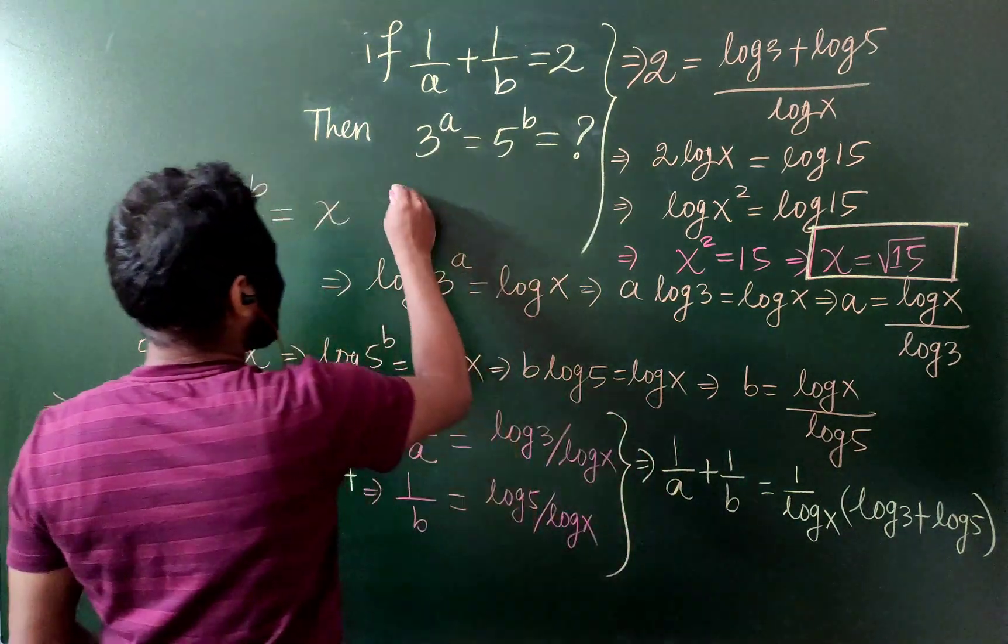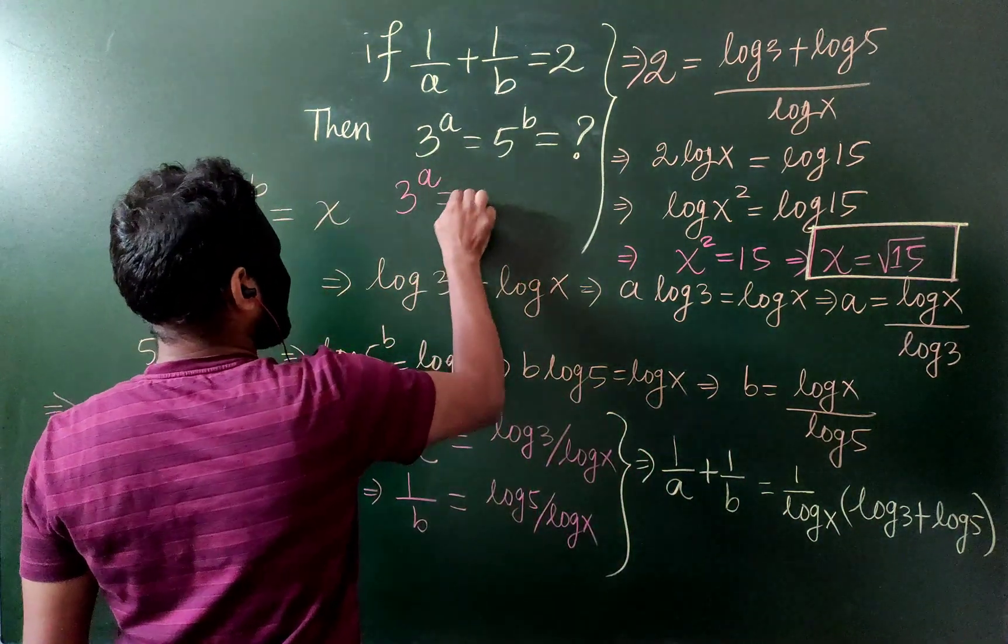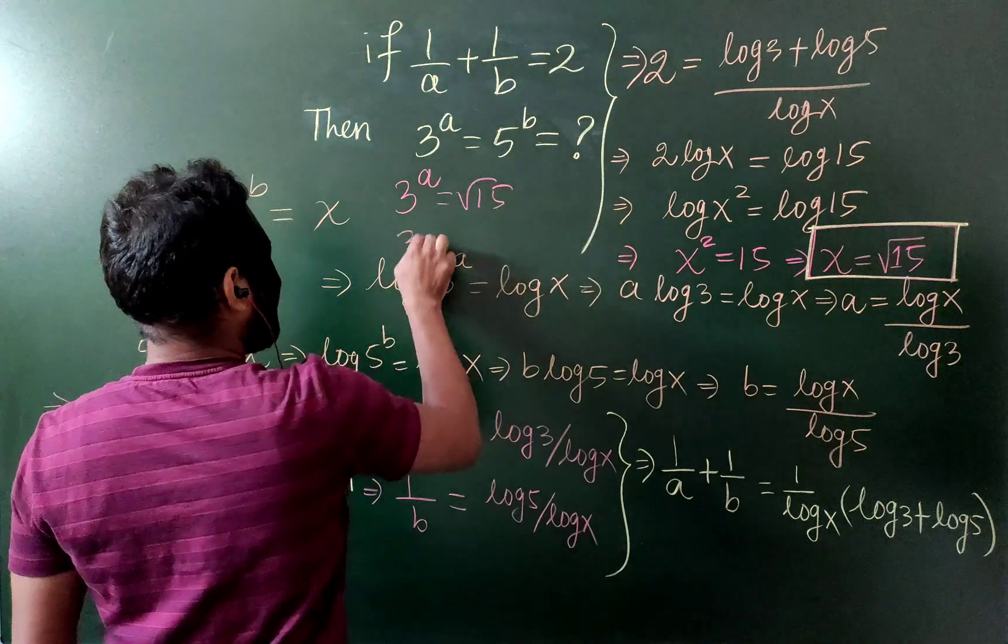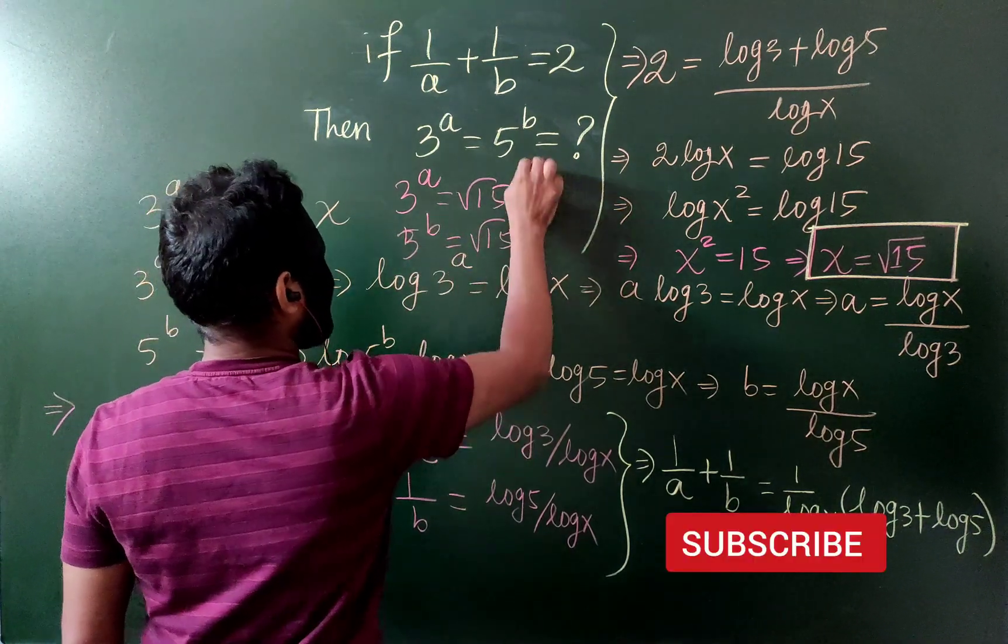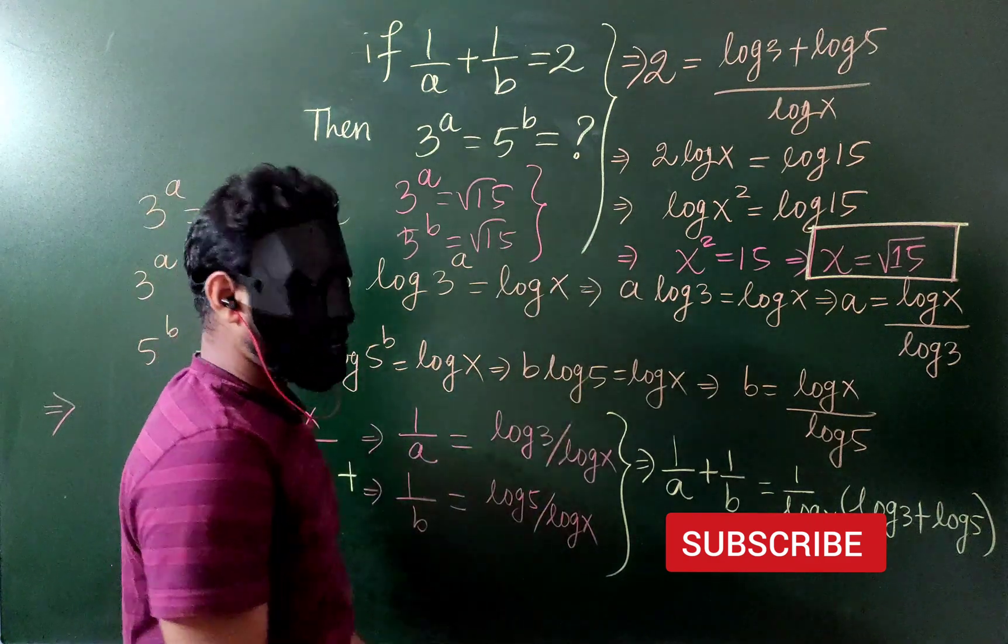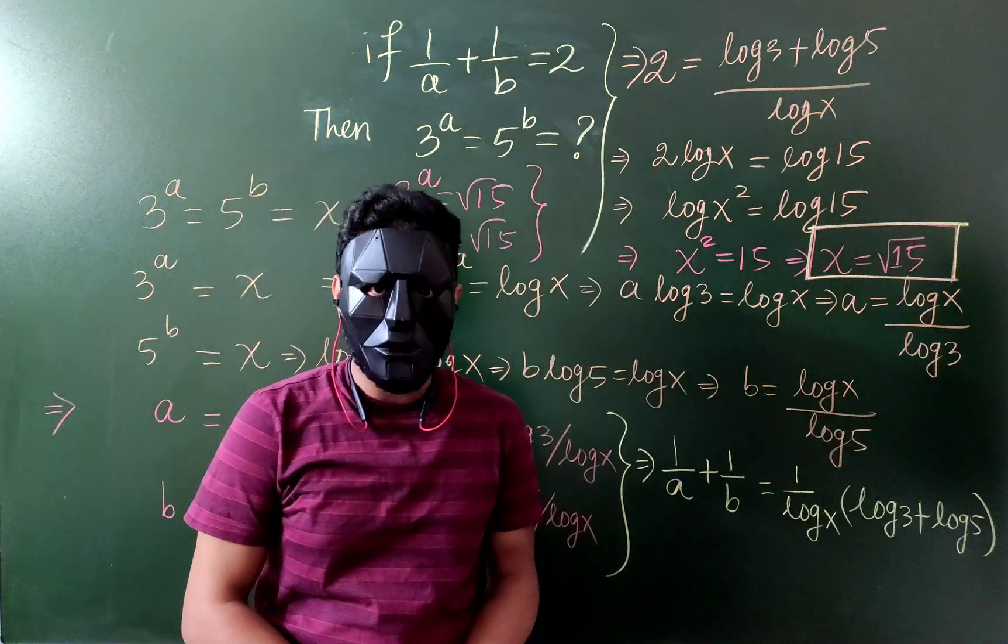So both things are, 3 to the power a equals to root 15, and 5 to the power b is also root 15 is the answer. Thank you for watching. See you next time with one new video. Till then, bye bye.